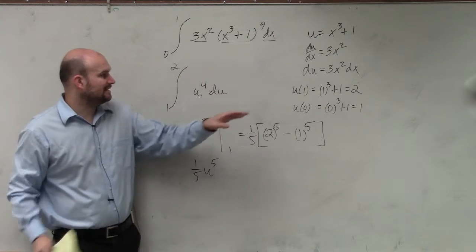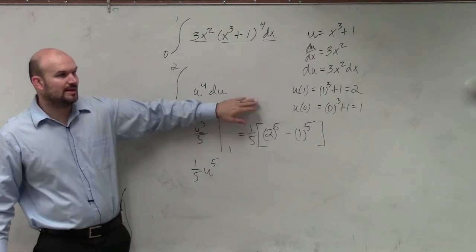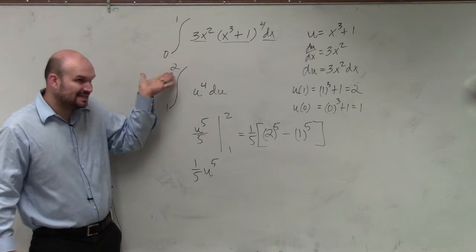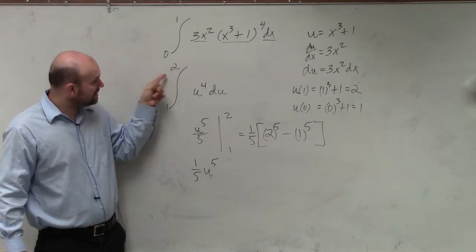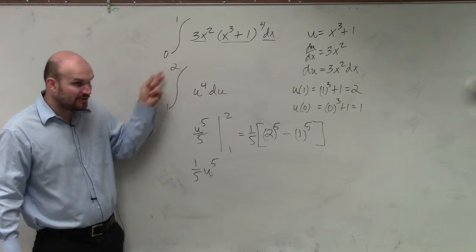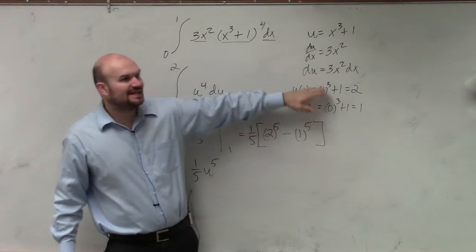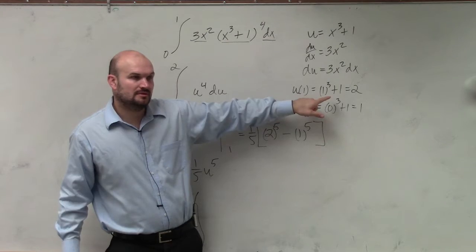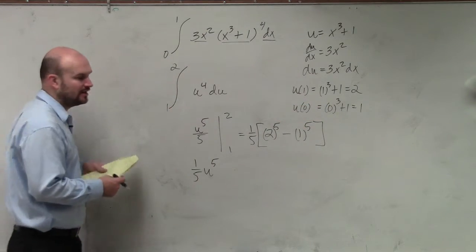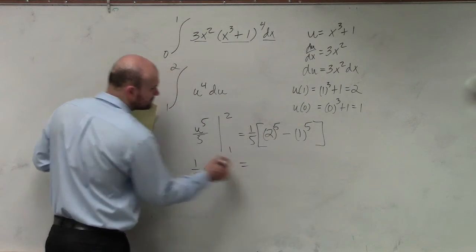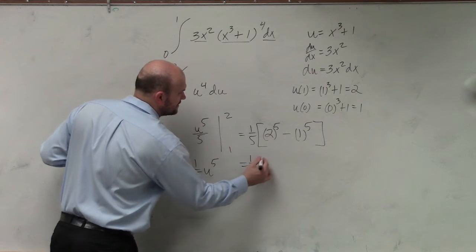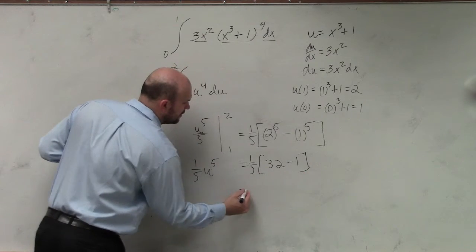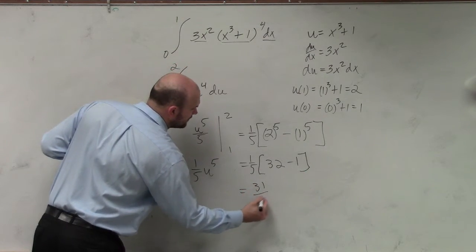Guys, you're confusing this with what we did last class period. We're not plugging u back in — we're evaluating this definite integral using the new bounds. We already accounted for u by finding our new endpoints. So in this case, I have 1/5 times 32 minus 1, which is 31 over 5.